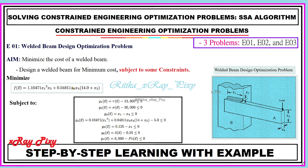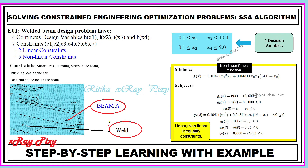This is the objective function, and here we have different constraints for this problem. We have four continuous decision variables and seven constraints — two linear and five non-linear.